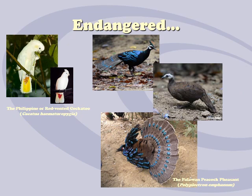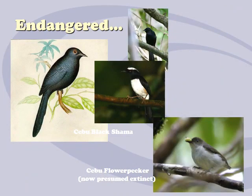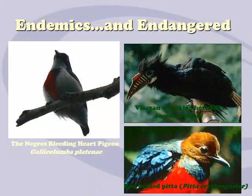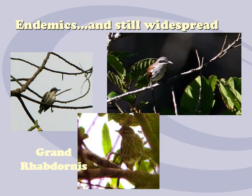Other endangered birds include the red-vented cockatoo, the Palawan peacock, the Sulu hornbill, the black shama, the Cebu flower pecker — which is considered already extinct — the Negros bleeding heart pigeon, which has a red feather on the breast area, the red-bellied pitta, the Visayan hornbill, and the grand rabdornis — locally known as bato-bato, very similar to maya. These are endemic but still relatively widespread.